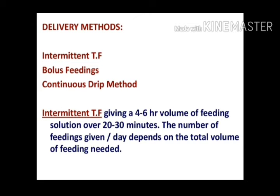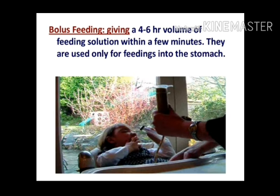Now we will see delivery methods — how we can give feed. First is intermittent tube feeding, next is bolus feeding, and next is continuous drip feeding. Intermittent tube feeding means we give the patient a set volume — like 200 ml or 300 ml — every 4 or 6 hourly, sometimes even every 2 hourly. The feed is given over 20 to 30 minutes, and the total daily volume is divided across 24 hours.